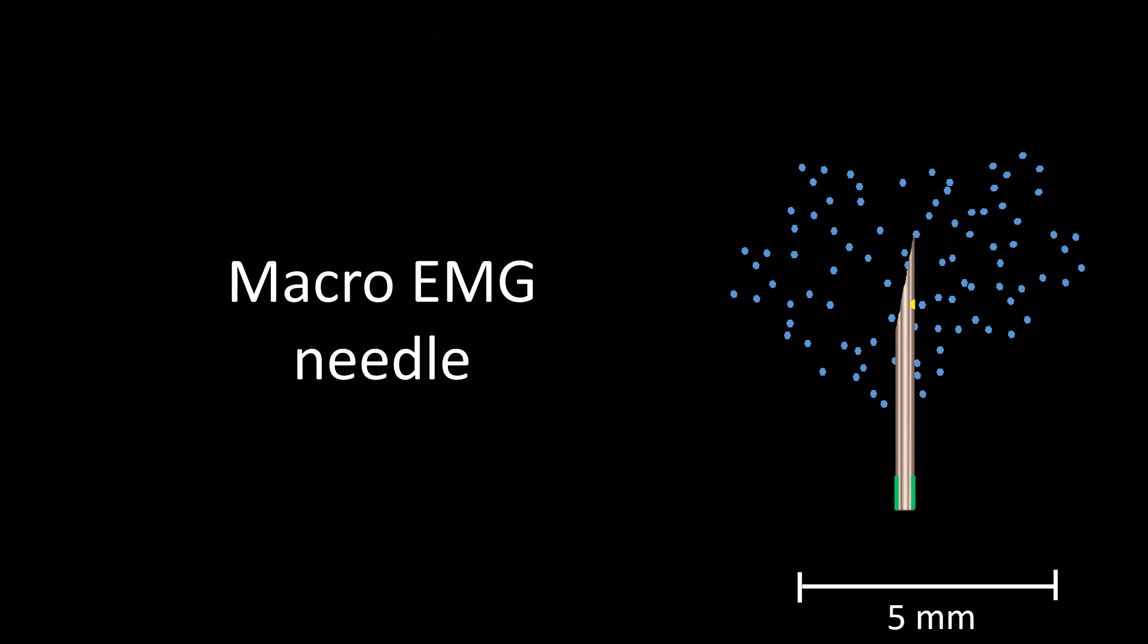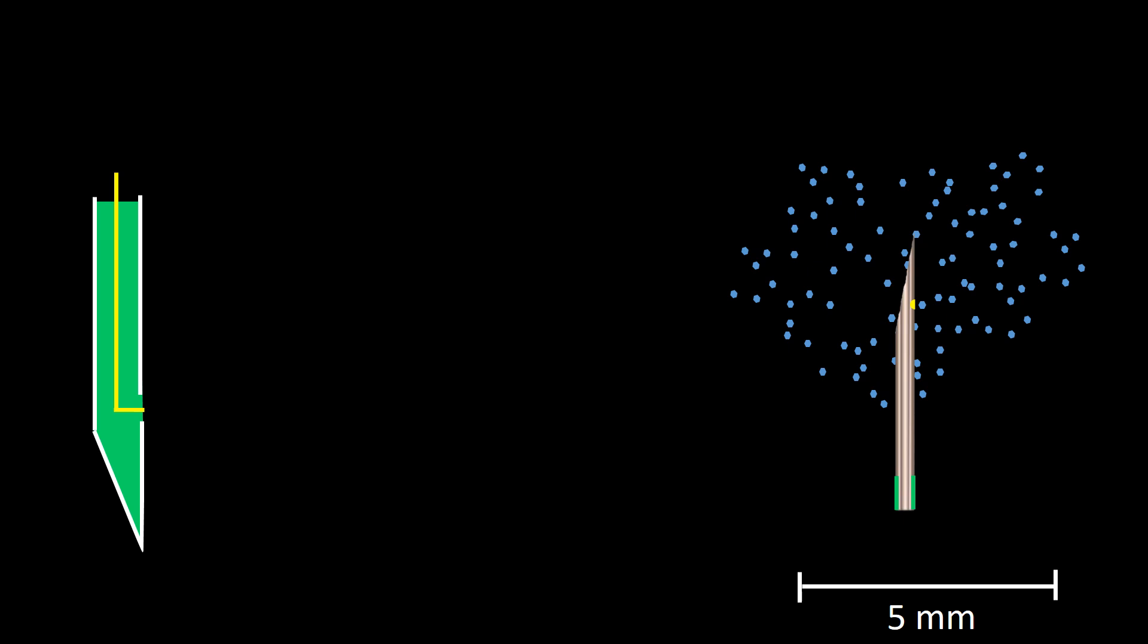The macro EMG needle is a modified single fiber EMG needle in which the distal 15 millimeters of the cannula remains active but above it the shaft is covered with a layer of insulating material. In this frame I have added single fiber EMG which I will use to show the transformation required to build a macro EMG.